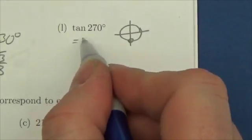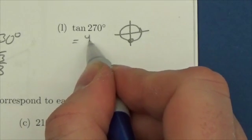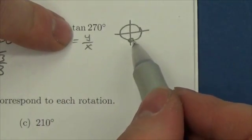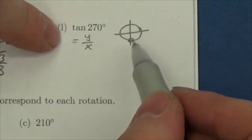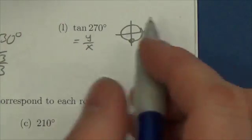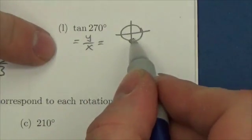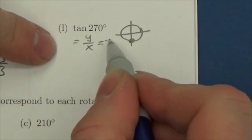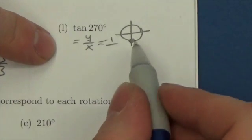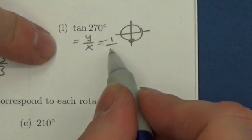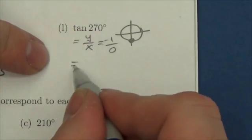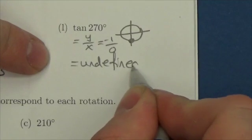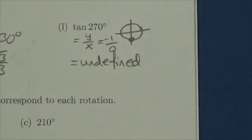Tangent of 270 degrees: 270 is a quadrantal angle. Tangent equals y over x. On the unit circle the y-coordinate would be negative one, but more importantly we are on the y-axis so the x-coordinate is zero. Dividing by zero means the tangent of 270 degrees is undefined.